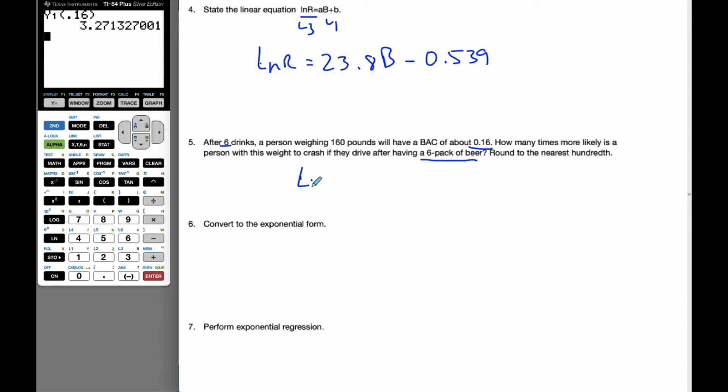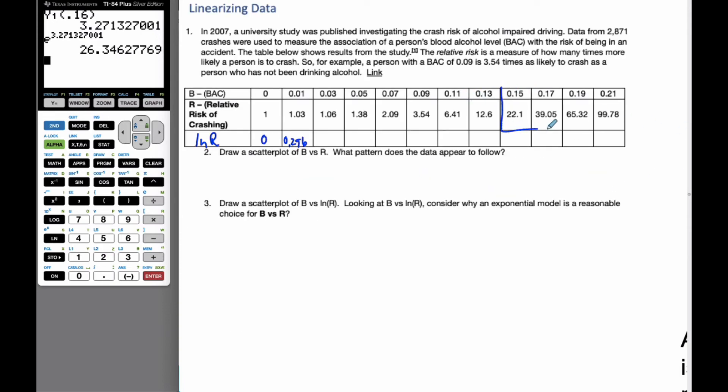So if I want to find R, which is the relative likelihood of crashing, I have to raise this to the power. So R is going to be e to the 3.2713. So if I go e to this power, I get R is 26.35 to the nearest hundredth. So if I have a six-pack of beer and drive, a 160-pound person is 26.35 times more likely to crash. Now if I look at my data set, that is in between these two values, and that seems like a very reasonable output based upon this data.